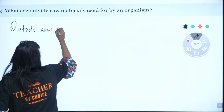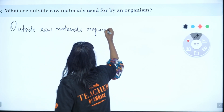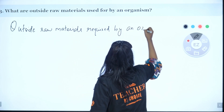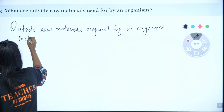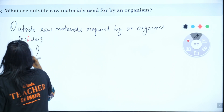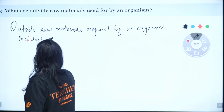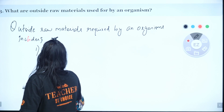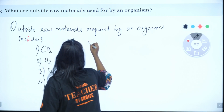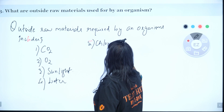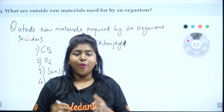Outside raw materials required by an organism include: first, carbon dioxide; second, oxygen; third, sunlight — in the case of plants; fourth, water; and fifth, for plants, chlorophyll. Chlorophyll is used to trap sunlight in photosynthesis. These are some of the raw materials required by organisms.